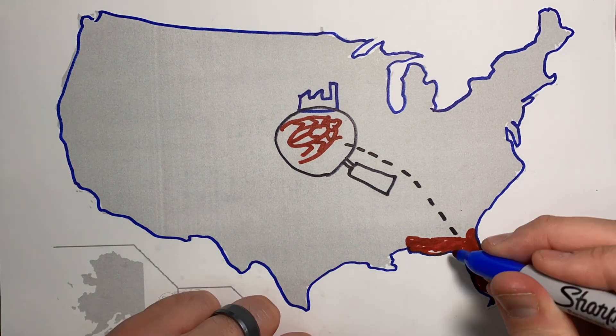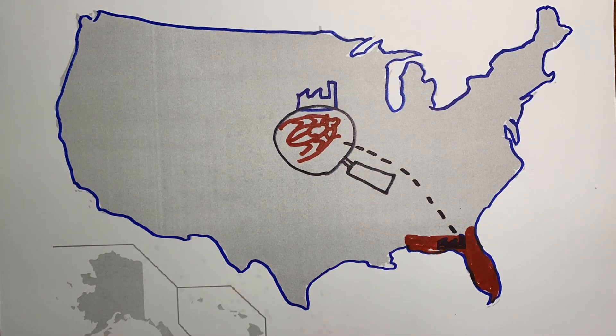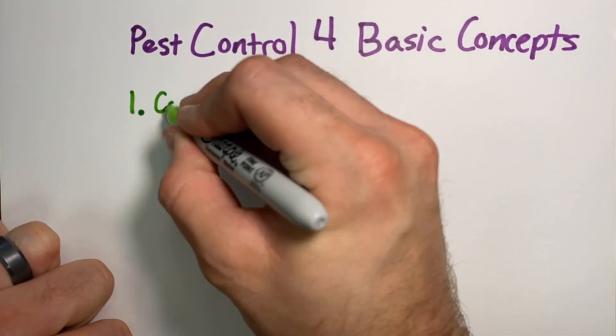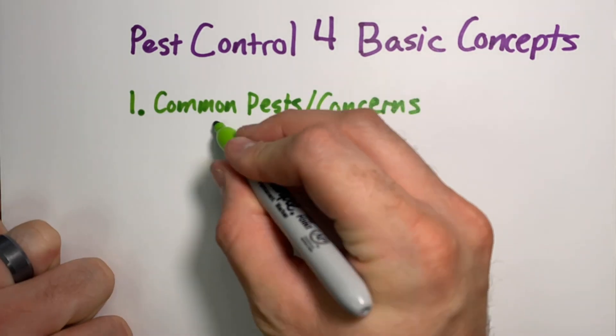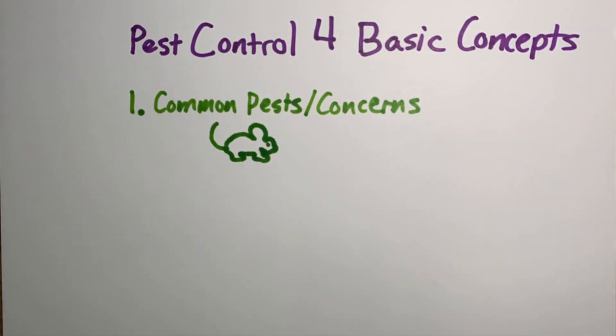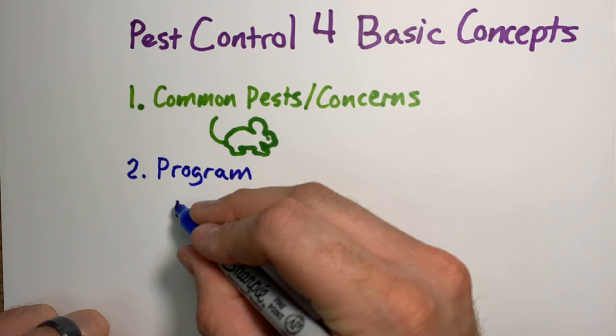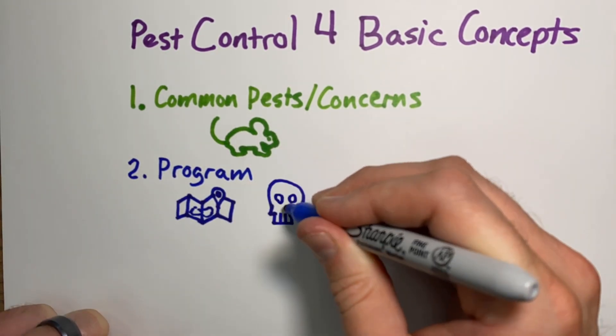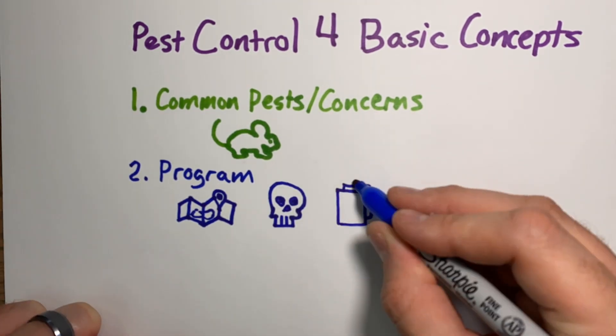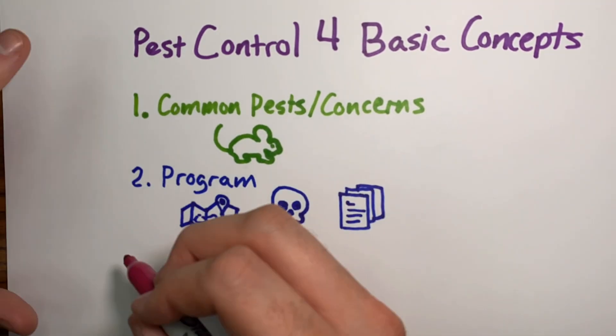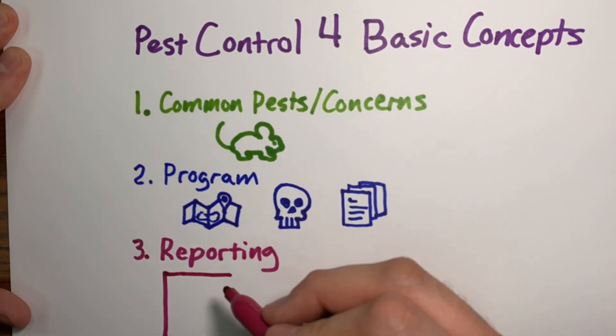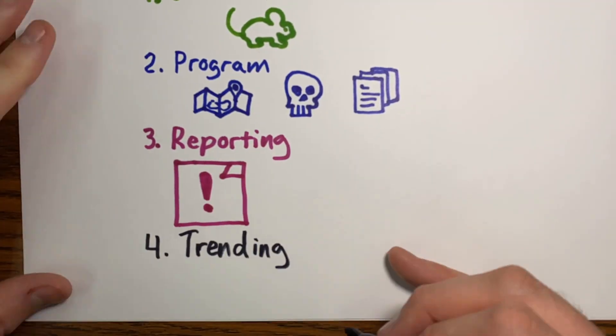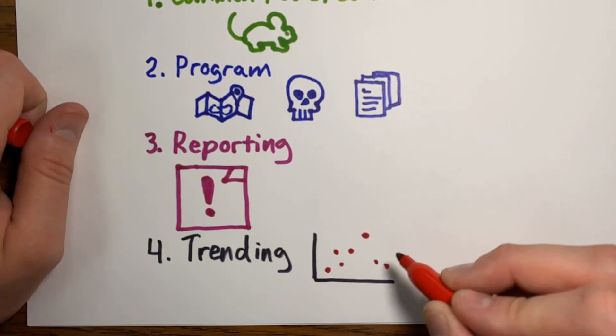To recap: There are several potential pests that can enter your plant, including birds, rodents, and insects. Each can carry nasty pathogens or bacteria that can make you or your customers sick. Second, you have a program in place. Third, do you have a way of reporting it and making it very efficient? Fourth, do you have trending? Are you seeing trends over time, taking action, and seeing the big picture?